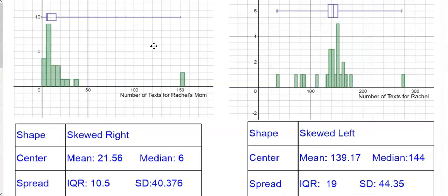So I have two histograms and the box plots. I can put the box plots on it also. So let's take a look at the shape, center, and spread. If you're asked to describe a distribution, it's wanting you to describe the shape, center, and spread of the data. So the shape I have listed here as skewed to the right. We're going to talk about Rachel's mom's text first. So skewed to the right.